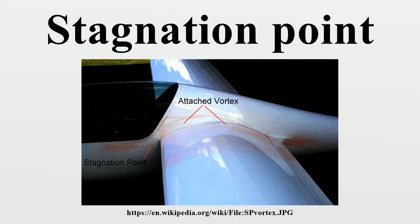In fluid dynamics, a stagnation point is a point in a flow field where the local velocity of the fluid is zero. Stagnation points exist on the surface of objects in the flow field, where the fluid is brought to rest by the object.